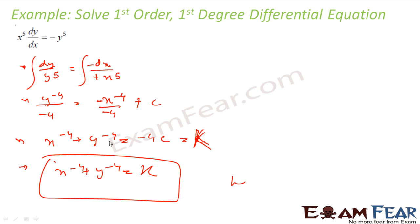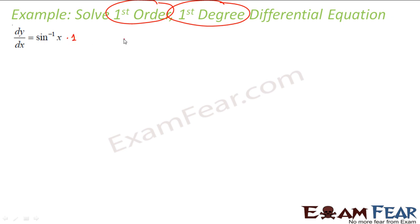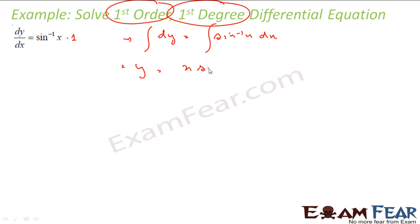The next question: dy/dx is equal to sin⁻¹x. This is first order, first degree. I can write dy equal to sin⁻¹x dx. Just integrate both sides and you get y equal to x·sin⁻¹x plus √(1−x²), plus constant.